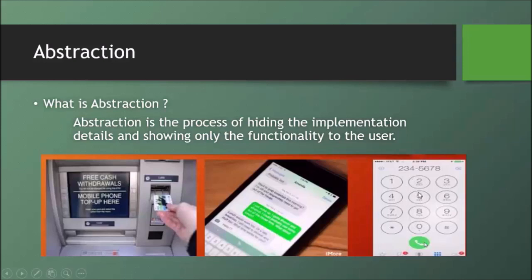So if we hide the internal process and only expose the necessary functionality, that is called abstraction.